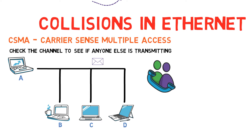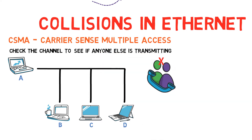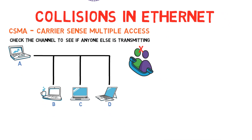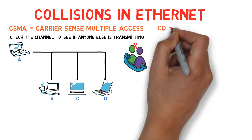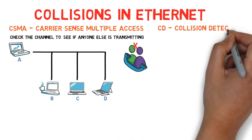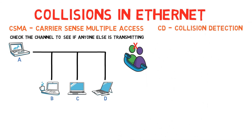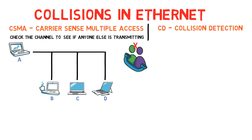Yet, just like the case where two people might start talking at the exact same time, two Ethernet machines might start transmitting data at the same time. In this case, CD — collision detection — comes into place. CD means that a transmitting device detects the fact that a collision has occurred.